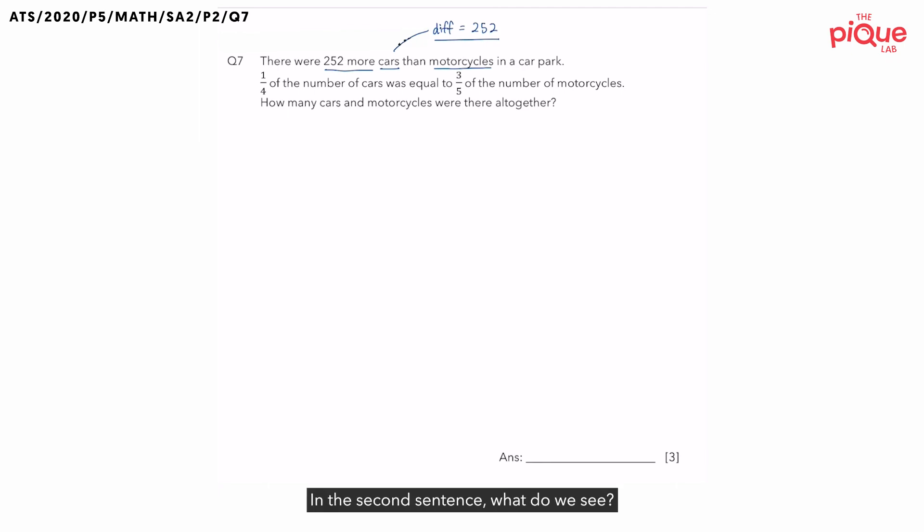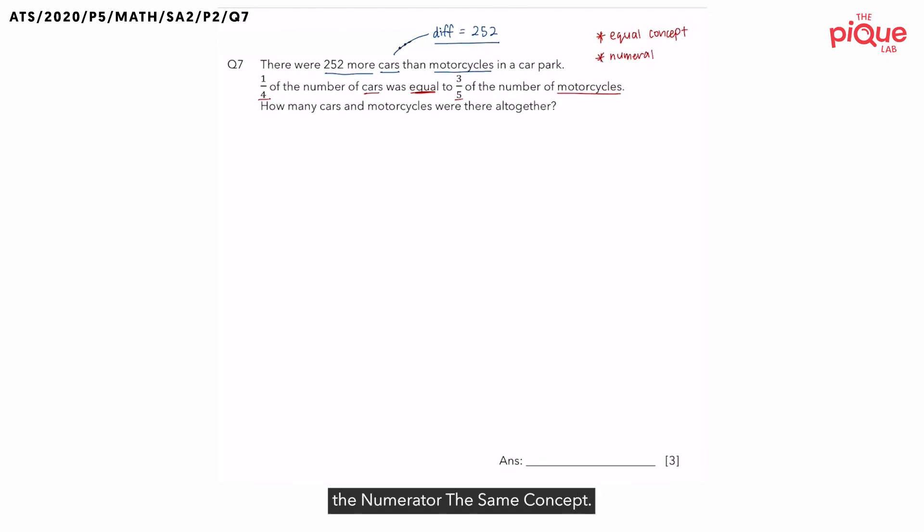In the second sentence, what do we see? One quarter of the number of cars was equal to three-fifths the number of motorcycles. Whenever we see one fraction of something is equal to another fraction of something else, most of you in school, you will learn that this is called the equal concept, or you may have heard your teacher call this the numerator the same concept.